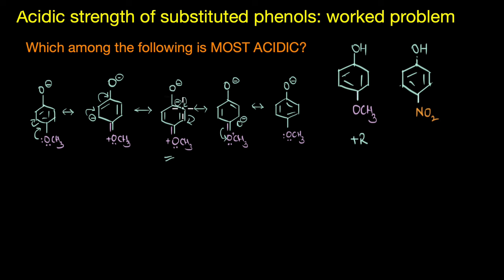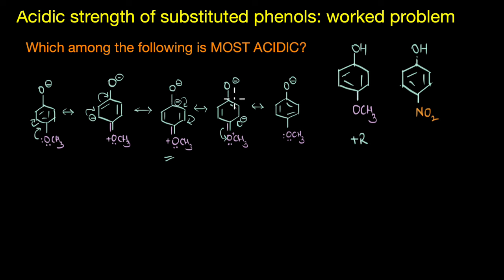Having two negative charges in close proximity is very destabilizing. Not only that, but because of this electron donation via the +R effect, the C-O bond polarity decreases. As a result it would not favor ionization to form protons — in other words, the acidic strength decreases.